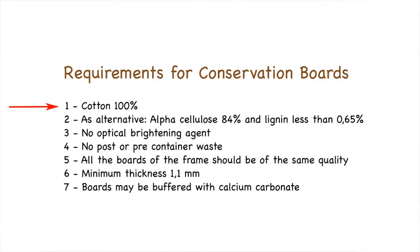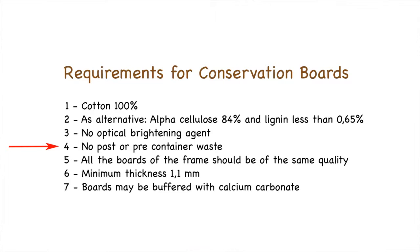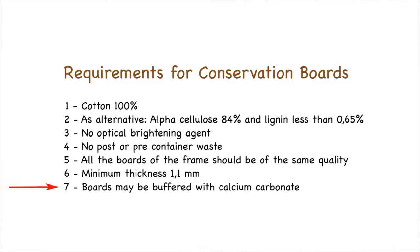Both of those types of board are used quite regularly in conservation framing. There are several requirements for conservation boards. Mountboard used in conservation framing is either made from 100% cotton linters or has an alpha cellulose content of greater than 84% and a lignin content of less than 0.65%. No optical brightening agents should be used, and for cotton board there should be no post or pre-consumer waste. It is best practice that all boards are the same quality and have a minimum thickness of 1100 microns.